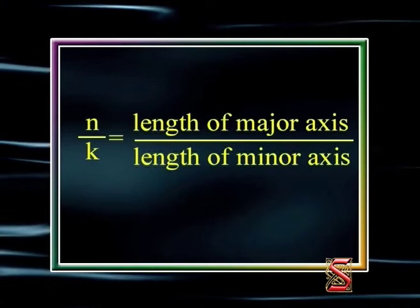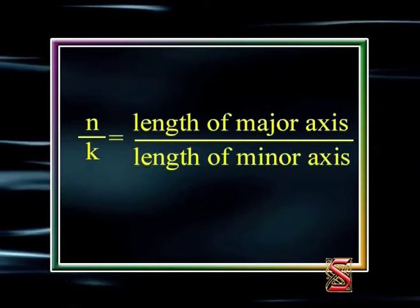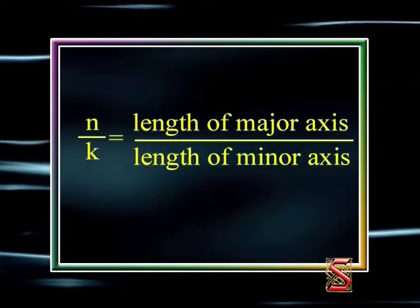Mathematically, it can be shown as: N/K = length of major axis / length of minor axis. The principal quantum number N denotes the length of the major axis. The azimuthal quantum number K determines the length of the minor axis, and also the eccentricity of the orbit.